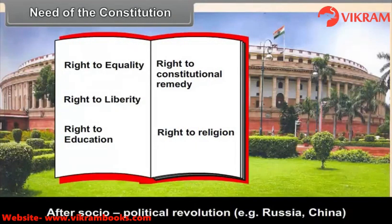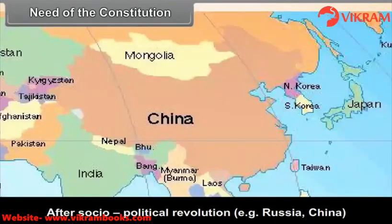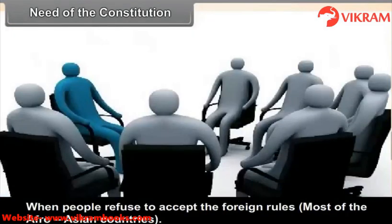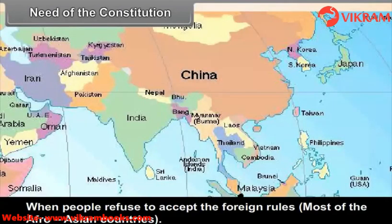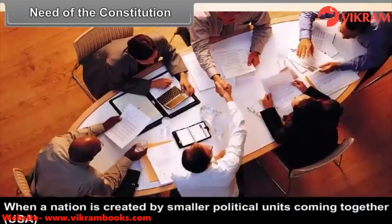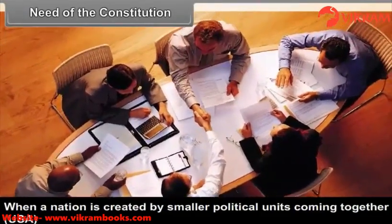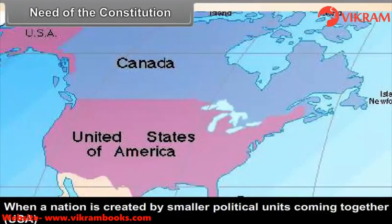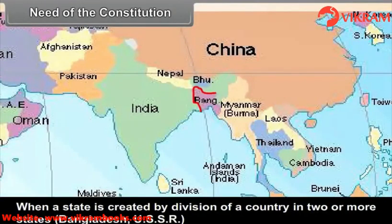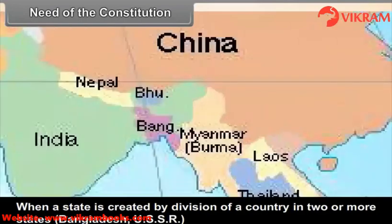A Constitution is needed after a socio-political revolution, for example in Russia and China. It is also needed when people refuse to accept foreign rule, as in most Afro-Asian countries. When a nation is created by smaller political units coming together, such as the USA. And when a state is created by the division of a country into two or more states, such as Bangladesh and the USSR.